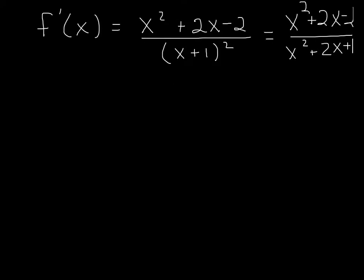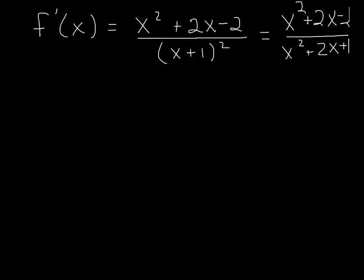So now I'm just going to move this up so we can only see the problem we're working on at the moment. So the first function, the numerator, x squared plus 2x minus 2, and its derivative is 2x plus 2.